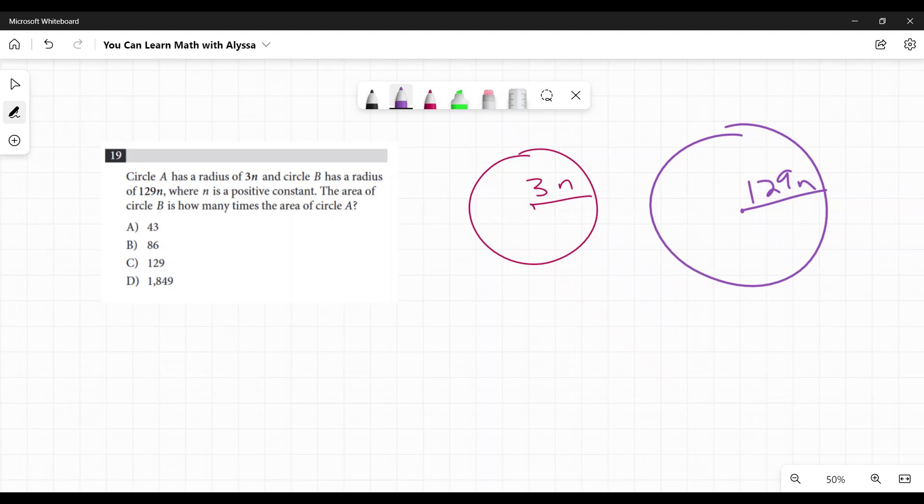First, we want to find the area of both of them. We say pi r squared is the area. Here we have 3n. So 3n is my radius. So it's going to be pi times 3n squared. That square goes outside. Be careful of that.